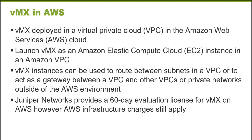Juniper Networks has created an Amazon Machine Image version of the Virtual MX platform that you can run inside of an Amazon Web Services virtual private cloud. You can use this VMX instance to route between subnets within your virtual private cloud or between virtual private clouds anywhere in the world. There's a 60-day evaluation version of the VMX, which allows you to run the VMX inside of your virtual private cloud for 60 days without the need to pay for the software license normally required to run the virtual MX software.